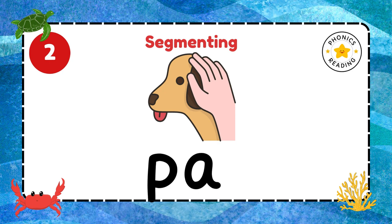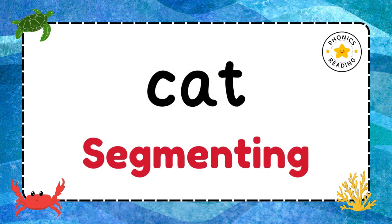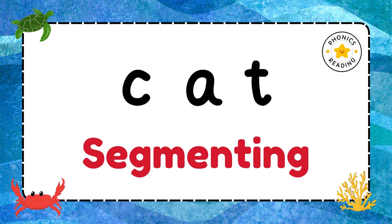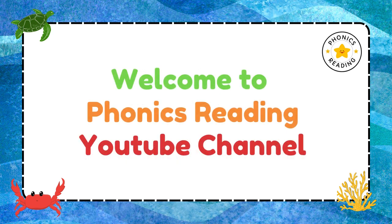Pat. What is the final sound? The ending sound is T. Write it. Very good. This skill of identifying the individual sounds in a word to spell is called segmenting. What we are doing? We are doing segmenting. And you are watching Phonics Reading YouTube channel.